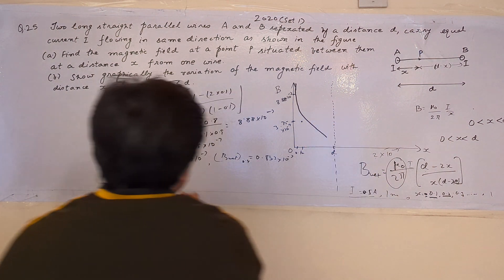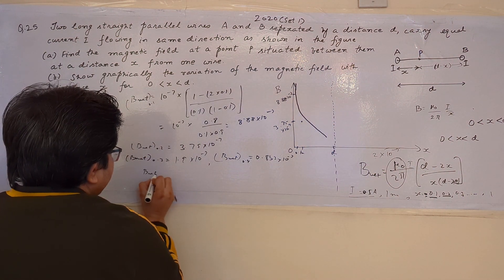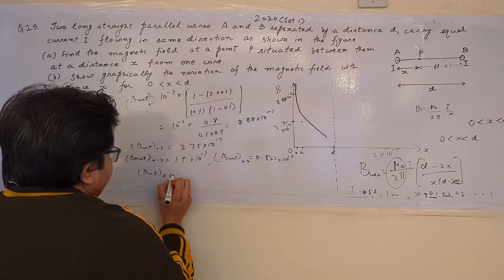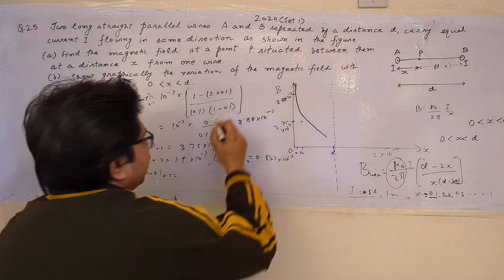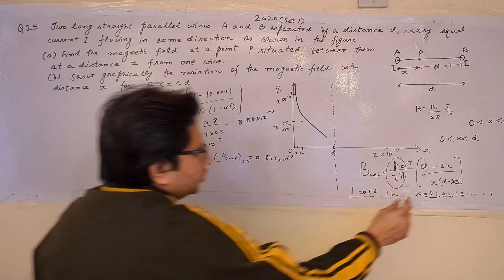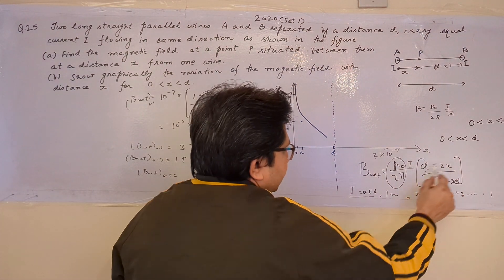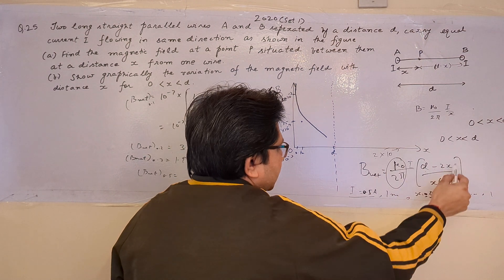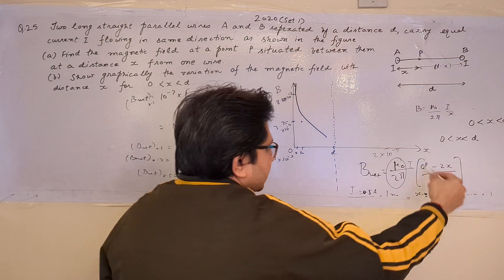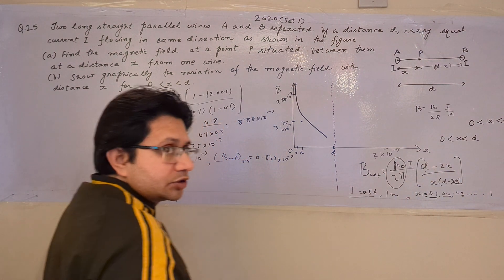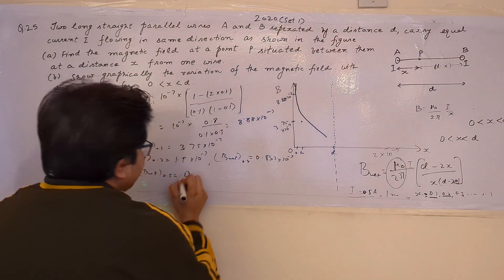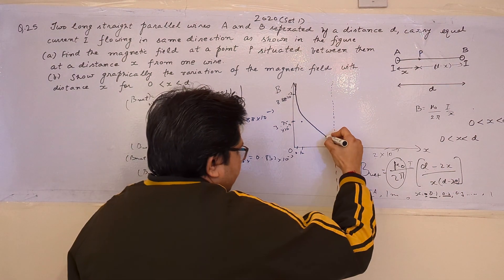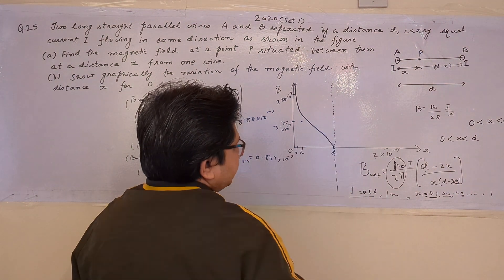When we put x = 0.5 (which is d/2), the numerator d − 2x = 1 − 2×0.5 = 0, so the magnetic field becomes zero. The graph therefore touches the x-axis at x = d/2, which is the midpoint between the two wires.